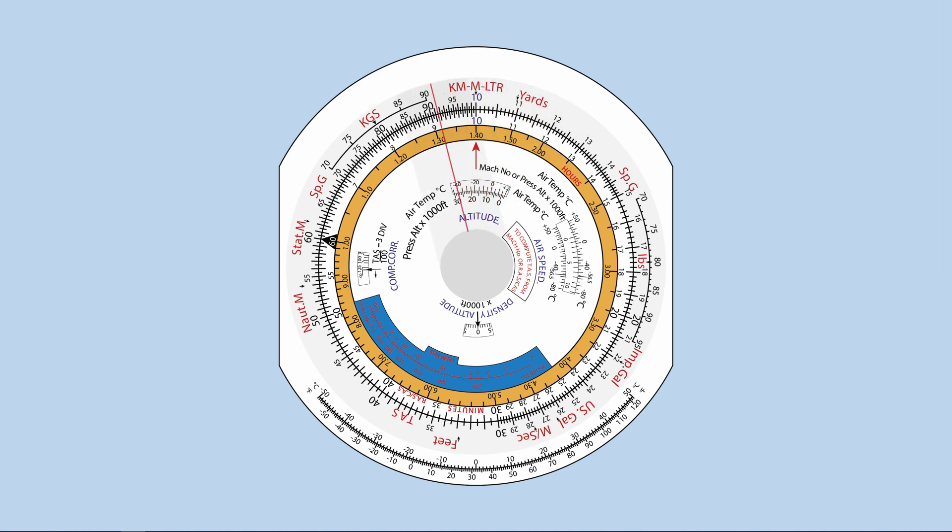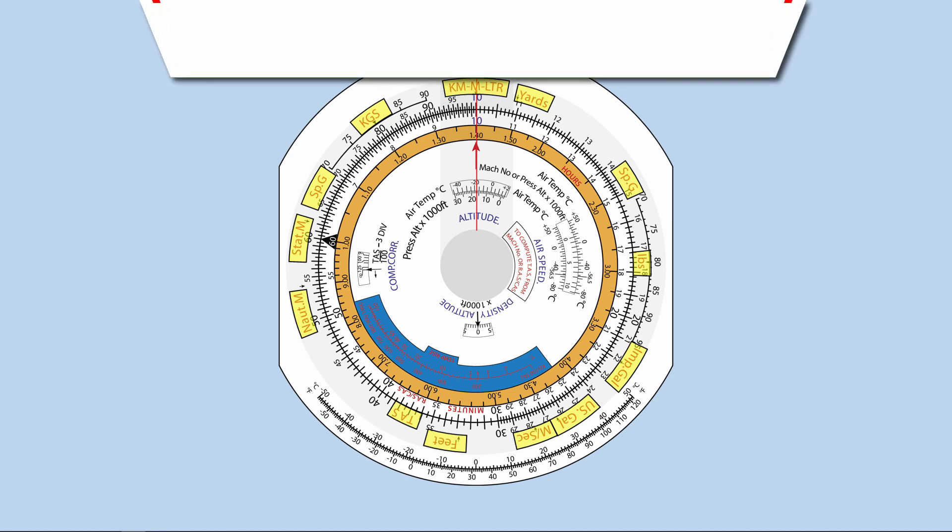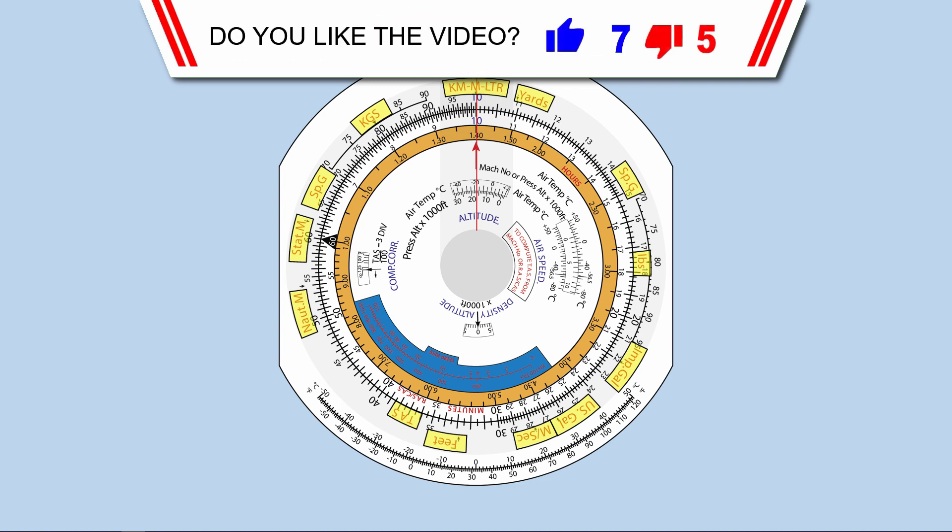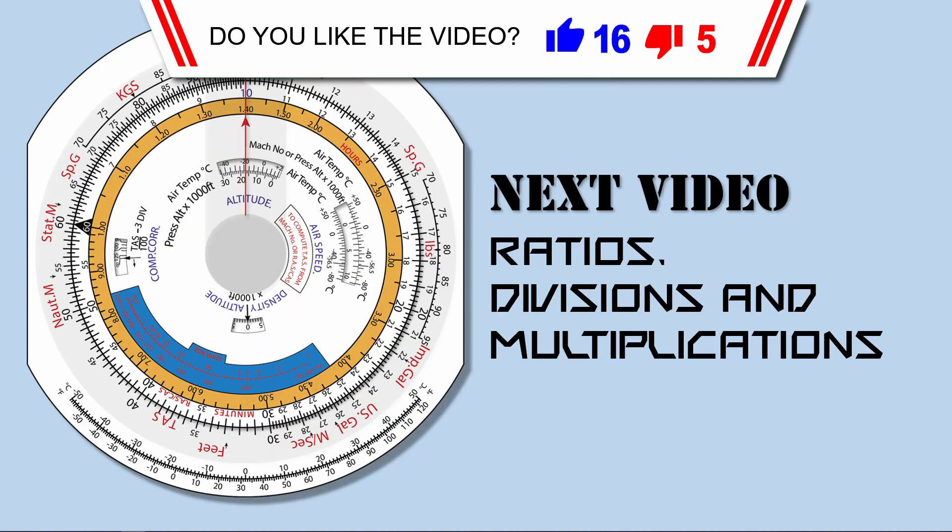CRP5 also has a cursor to help us read between two scales easier and much more accurate. Other than that, on the face of CRP5, there are markers used for conversion within and between SI and imperial units. Now that you know the basic principle and features of CRP5, use the following videos to find out how to use the many functions of the CRP5.